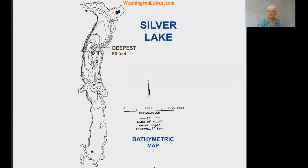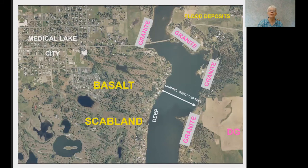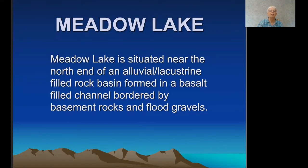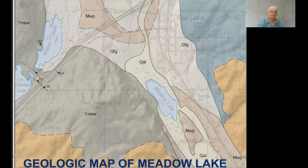Looking at Silver Lake again: the geology along the north half shows basalt on one side and granite and metamorphic basement rocks on the other. The bathymetric map shows the deepest point skewed toward the west side of the lake along the columnar basalts. The fresh appearance of colonnades above the lake waters and closely spaced contours below suggest a cliff of basalt undercut by flood flows, toppling the colonnades which broke apart along numerous horizontal fractures and were swept downflow. At the south end of the lake is a thick debris field of broken basalt. Meadow Lake is situated near the north end of an alluvial-lacustrine filled lake basin formed in a basalt-filled channel bordered by basement rock and flood gravels.